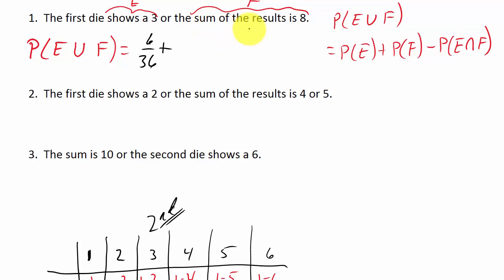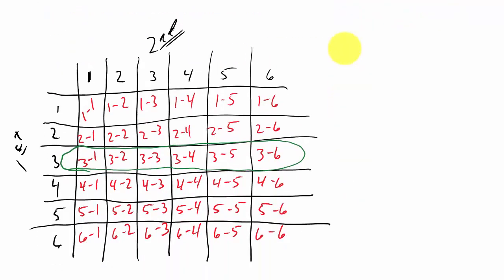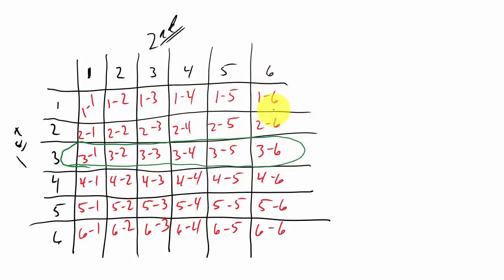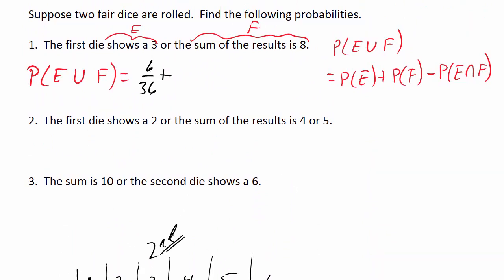Now for P(F), the sum is 8. Looking at which outcomes add up to 8, we count 1, 2, 3, 4, 5. So P(F) = 5/36.